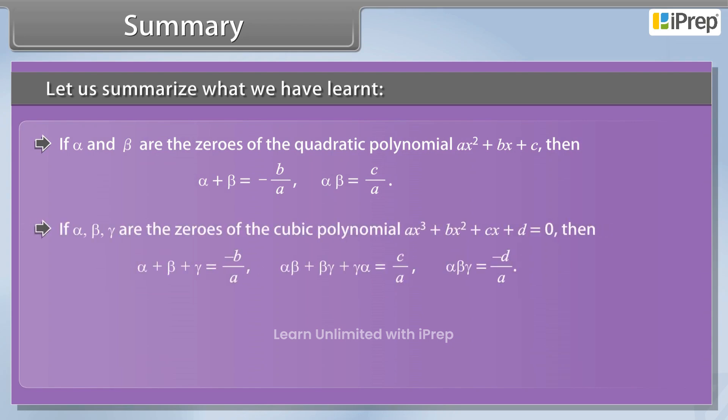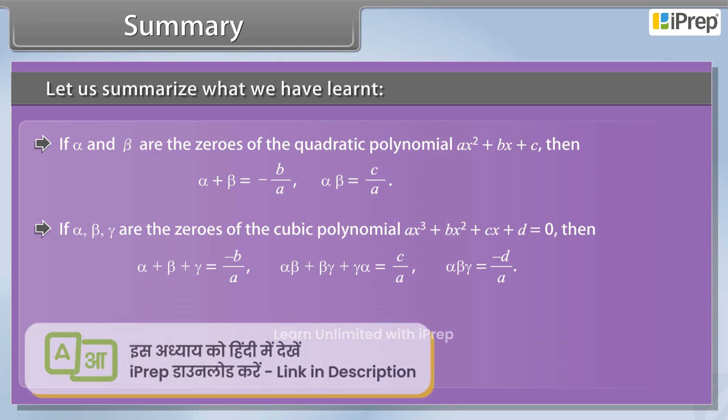If alpha, beta, gamma are the zeros of the cubic polynomial AX cubed plus BX squared plus CX plus D equals 0, then alpha plus beta plus gamma equals minus B upon A, alpha beta plus beta gamma plus gamma alpha equals C upon A, alpha beta gamma equals minus D upon A.